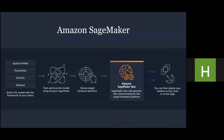Here is a pictorial representation of how Amazon SageMaker works. First, we choose our framework, then fine-tune it, choose our target hardware platform, train the model using Amazon SageMaker Neo, and then deploy it on the cloud.